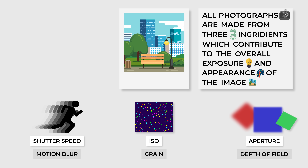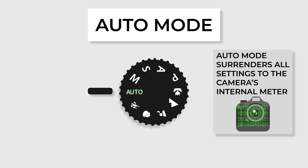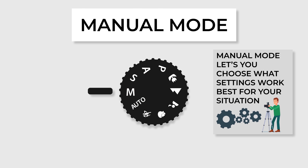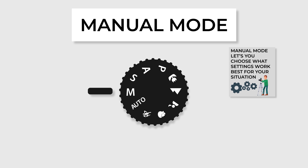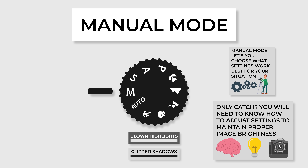In Auto mode, your camera will produce an adequately bright image, but it may not suit your creative needs. This is where changing over to Manual mode becomes useful. In Manual mode, the camera settings are no longer surrendered and you have full control over how your image will look. The only catch is that you will need to know how to maintain a sufficiently bright image — one with no blown highlights and hopefully no clipped shadows — and knowing the values of shutter speed, aperture, and ISO that produce these images will be helpful in adjusting your camera as you seek to fulfill your creative ideas.